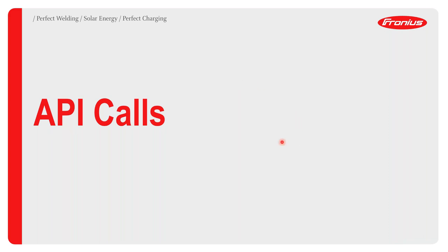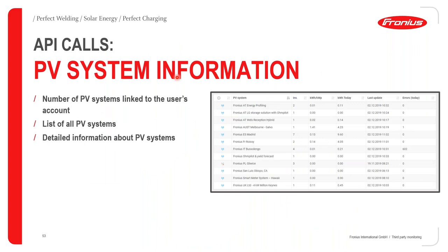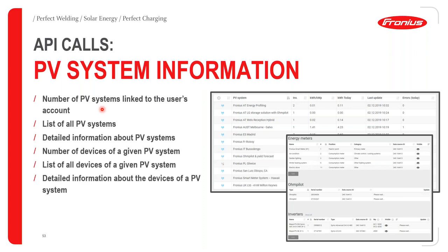Now let's look at the kinds of API calls available from SolarWeb: PV system information, aggregated data, historical data, power flow data, service messages data, and metadata from your PV system. For PV system information, you can see the total number of PV systems linked to the SolarWeb account, a list of the PV systems, detailed information including number of devices per system.